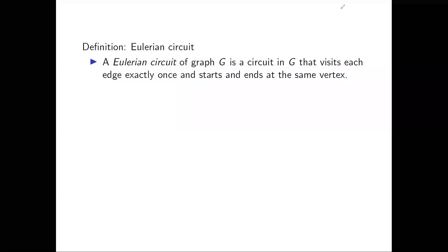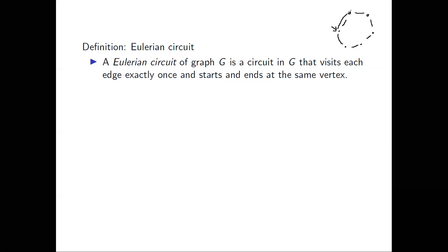To illustrate this definition, let's draw a picture. The first picture is a simple graph — just a cycle. To find a Eulerian circuit, we just need to find a circuit that visits each edge exactly once and starts and ends at the same vertex. We pick a starting vertex, go through each of the vertices and edges, and finish at that starting vertex.